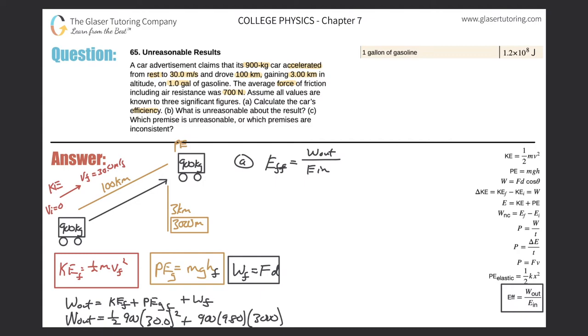And then plus the work due to friction. Remember, it's just the force of friction times the distance the car traveled. So the force of friction, the average force of friction was 700 newtons, multiplied by the distance. The distance they gave us in kilometers. We have to multiply that by 1000 to get meters. So it'd simply be 100,000 meters.